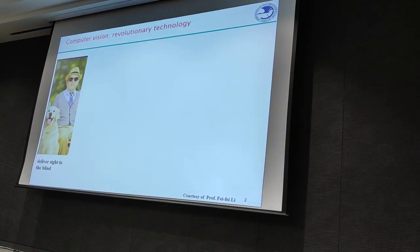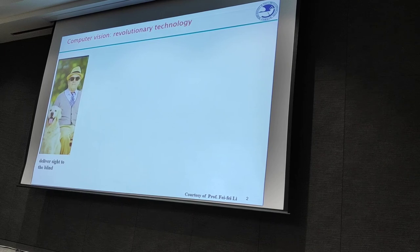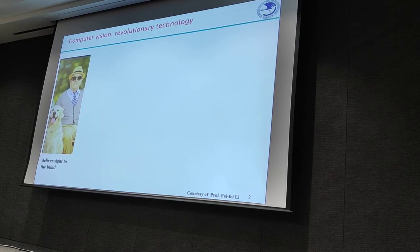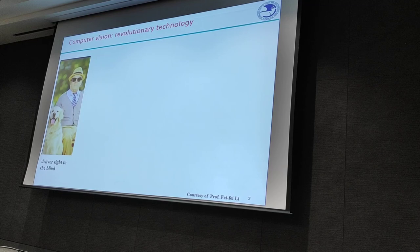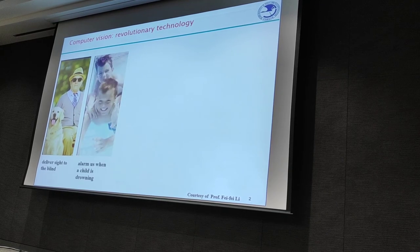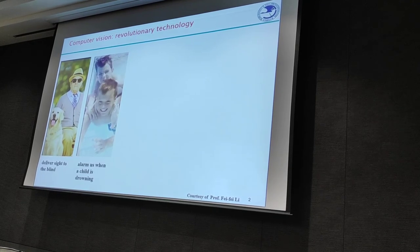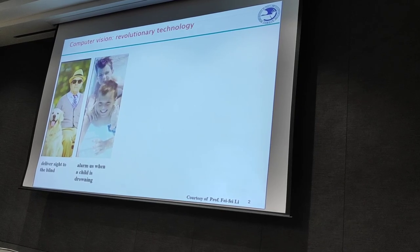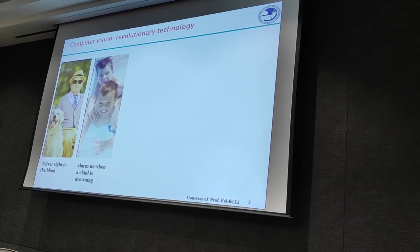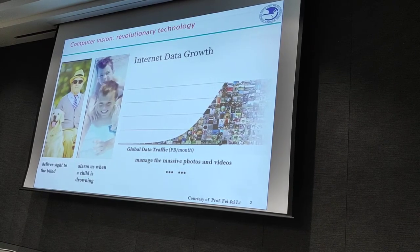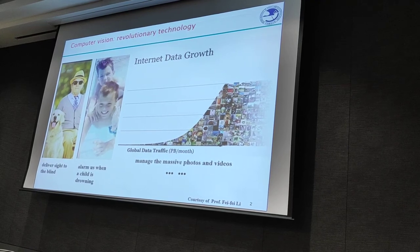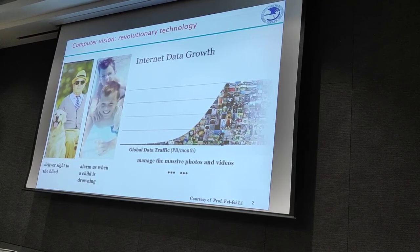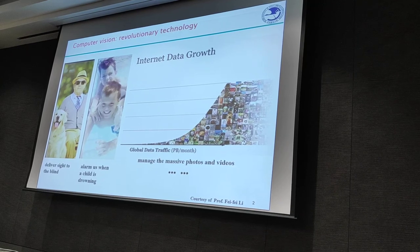Computer vision is one of the most revolutionary technologies in computer science. For instance, it can help us deliver sight to the blind by smart glasses, alert us when a child is drowning in the swimming pool by security cameras, and most importantly, help us understand and manage the massive photos and videos that a person may take millions of years to view.